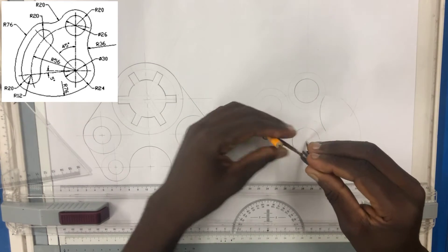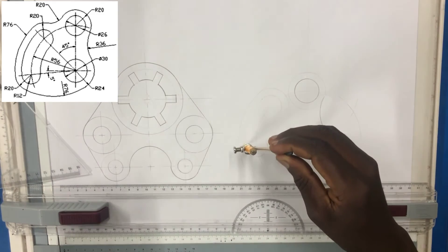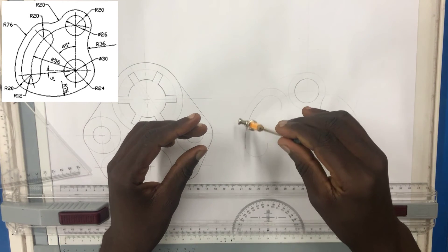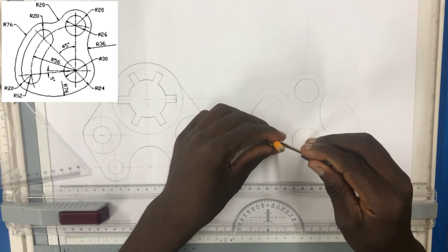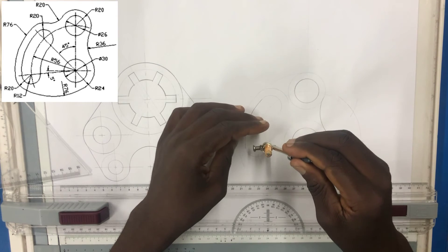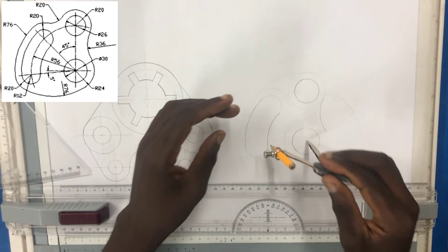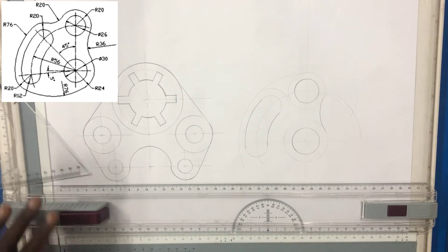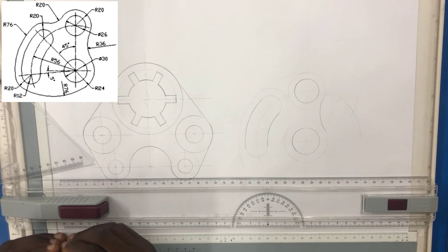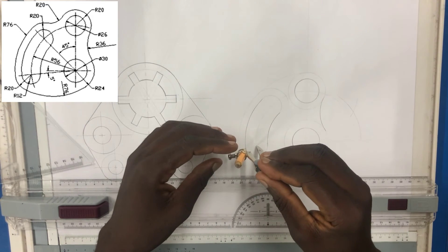Then you can join this using the compass. You can also join the bottom, and you can also join the arc of radius 12. This is the center of radius 12.